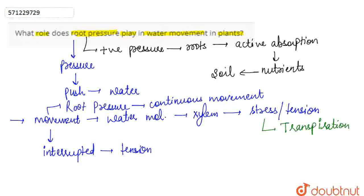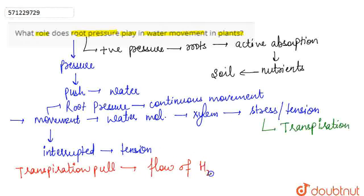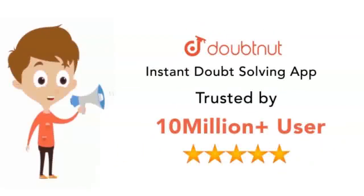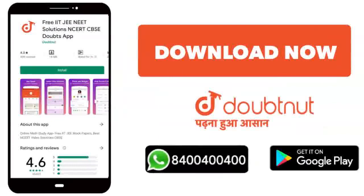The transpirational pull maintains and regulates the flow of water molecules from roots to shoots and then further to the leaves. So the role of root pressure in water movement in plants is that it provides the continuous movement of water molecules.